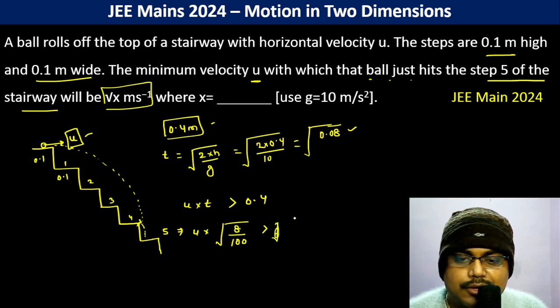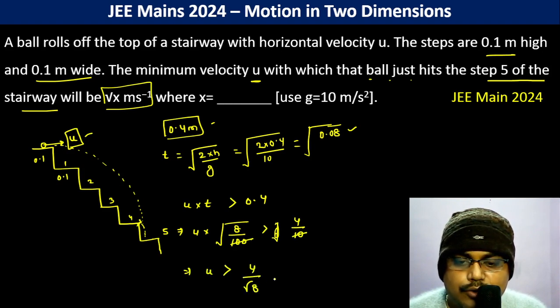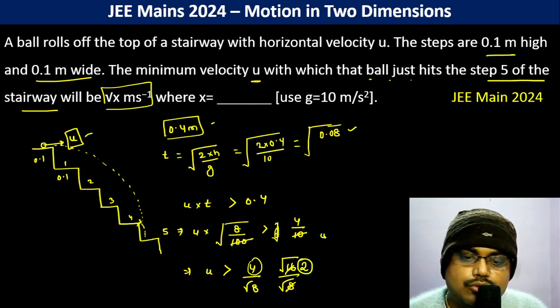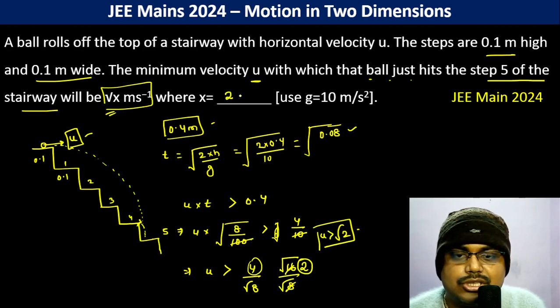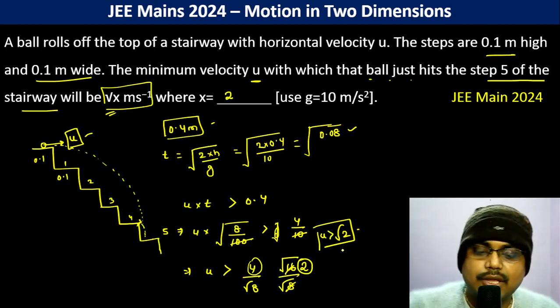So u should be greater than 4 by root 8. This actually is root 16, so root 16 by root 8, therefore u should be greater than root 2. So x is 2.